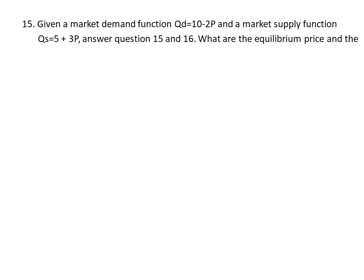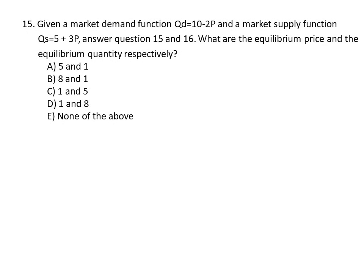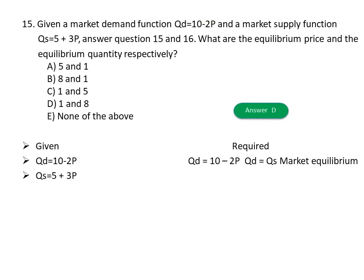Explanation: Both quantity and price will increase if demand and supply both increase but the rise in demand is greater than the rise in supply — meaning the price reduction due to increased supply is less than the price rise due to increased demand.